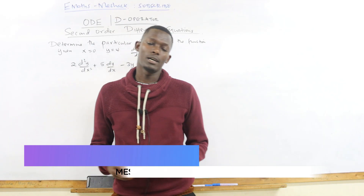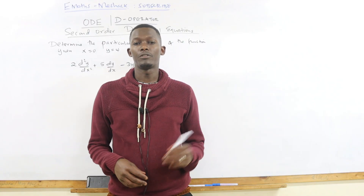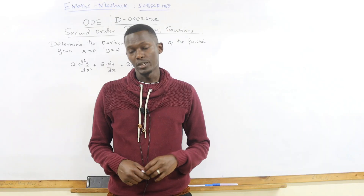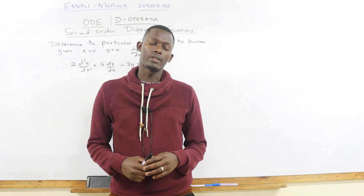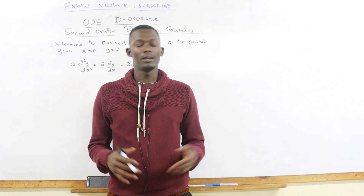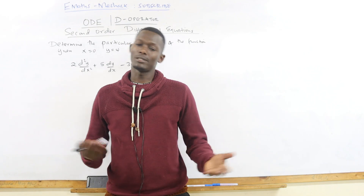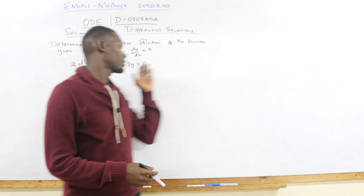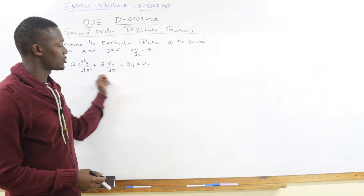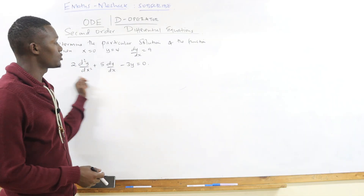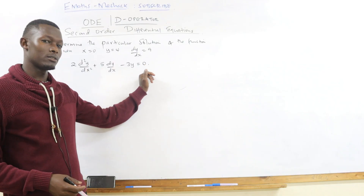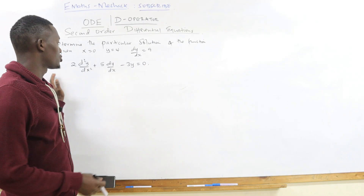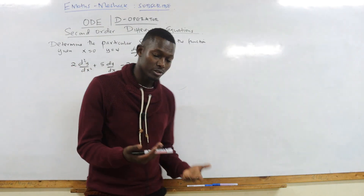We're going to be checking a specific method used to solve differential equations called the D operator method. We're going to start with simple cases — where the ordinary differential equation has zero on one side, with the function on the other side. We're going to check them in different methods.